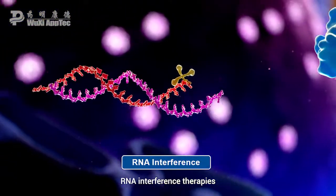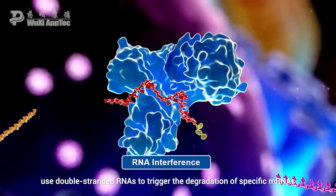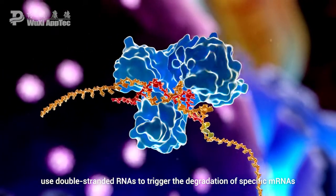RNA interference therapies, on the other hand, use double-stranded RNAs to trigger the degradation of specific mRNAs.